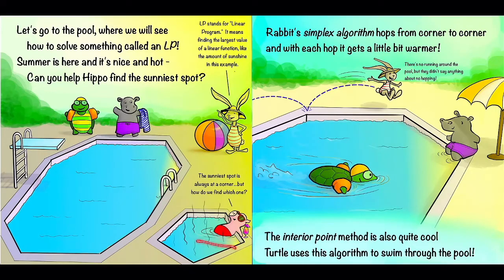Pig, who's chilling here in the jacuzzi, tells us that the sunniest spot is always at a corner. In this case, it's here. But how do we find which one? There's a bunch of different algorithms that can solve LPs, but here are two of them.